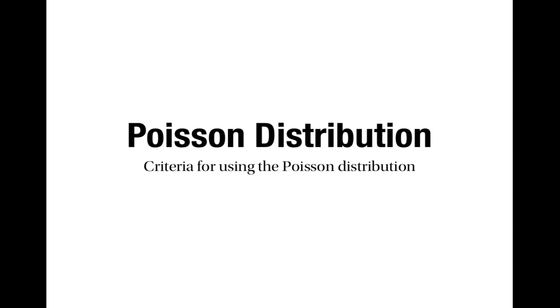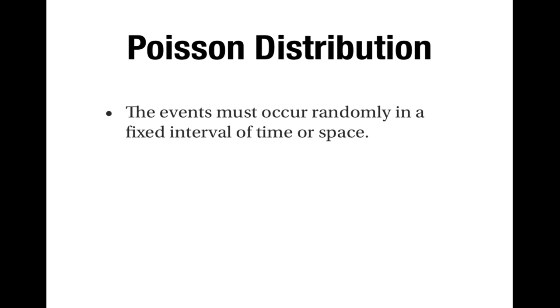This is a video about criteria for using the Poisson distribution. There are four criteria. First of all, the events must occur randomly in a fixed interval of time or space.